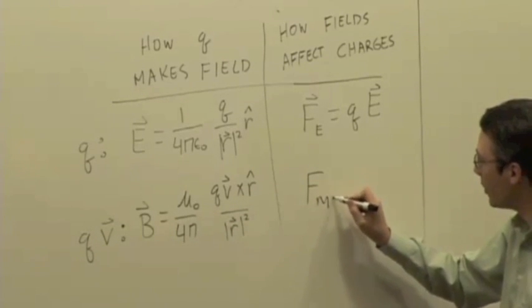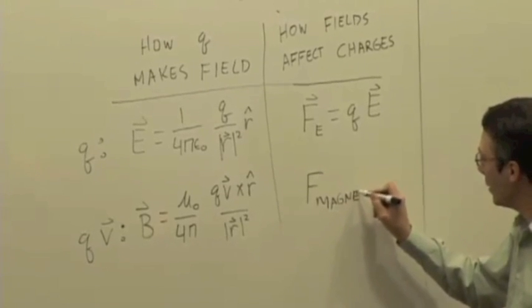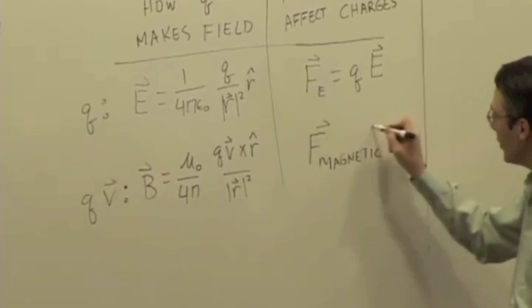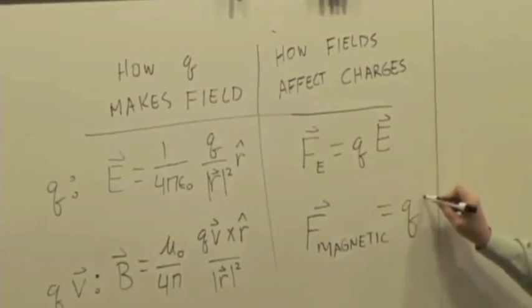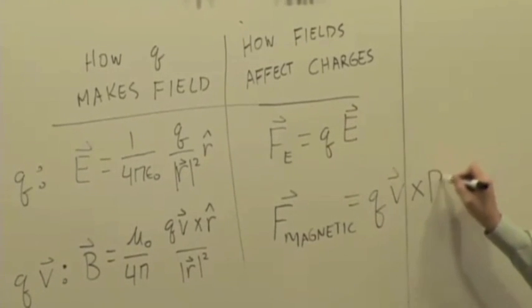So we can say the magnetic force—I'll just introduce the relationship and then we'll talk about it—is q v cross B, yet another cross product. It's the charge times the cross product of its velocity with the magnetic field.